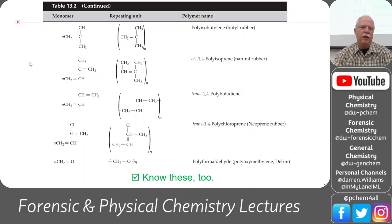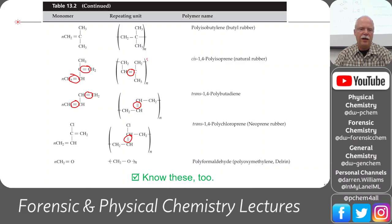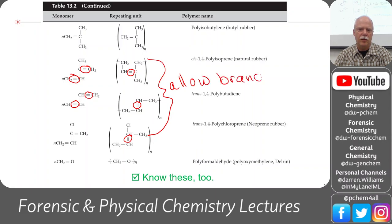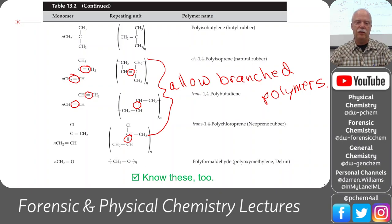More hydrocarbon monomers: isobutylene, polyisoprene, and polybutadiene—these have multiple double bonds, so they end up with double bonds remaining in the polymers after polymerization. Polychloroprene is similar. These are important for branching because after polymerization you still have double bonds you can attach to, making them very versatile starting polymers.